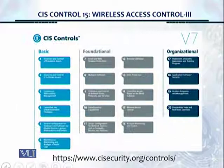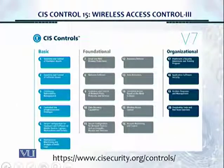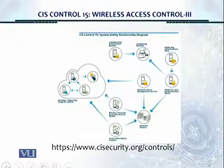This is the version 7 CIS controls layout. We're talking about wireless access control, CIS control number 15, and this is the system entity relationship diagram that we've already discussed. We are using many mechanisms here to control wireless access.